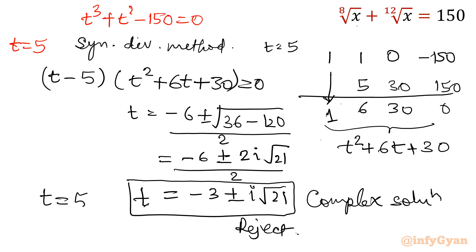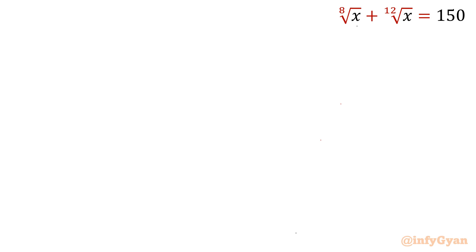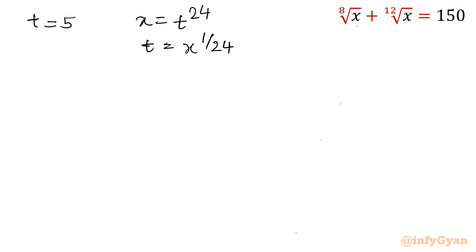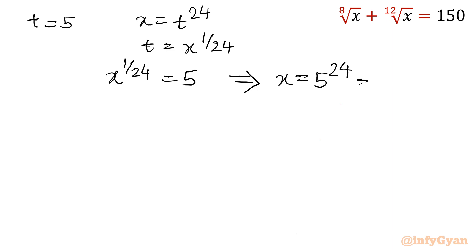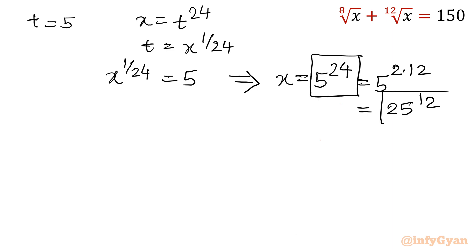So the confirmed solution is t equal to 5. Now let us find x. The substitution was x equal to t raised to the power 24, so t equals x raised to the power 1 over 24. Writing x raised to the power 1 over 24 equal to 5, and raising both sides to the power 24, x will be equal to 5 power 24. Or since 5 power 24 equals 5 power 2 times 12, by the exponent property we can also write this as 25 power 12. So x equals 5 power 24, or equivalently 25 power 12.